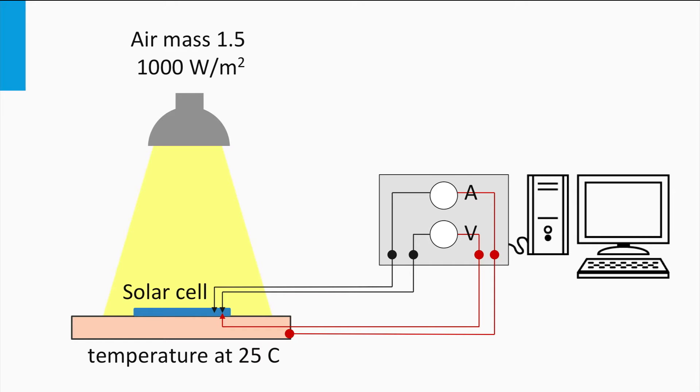Finally, a temperature controlled substrate guarantees that the solar cell is at the required standard temperature of 25 degrees Celsius. Let's see how such measurement in reality works. For that we will go to the Delft Solar Lab.